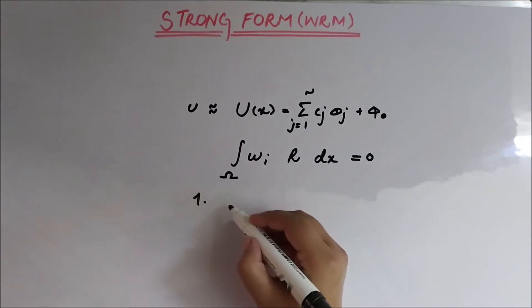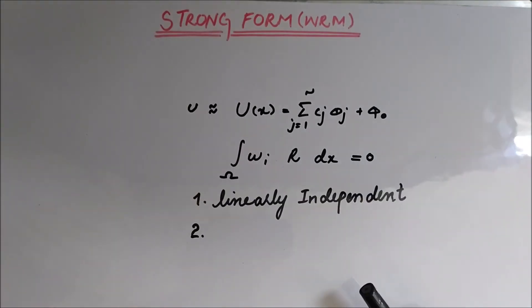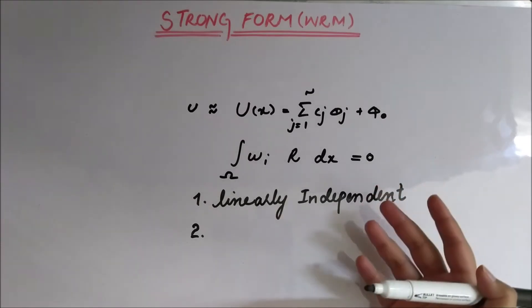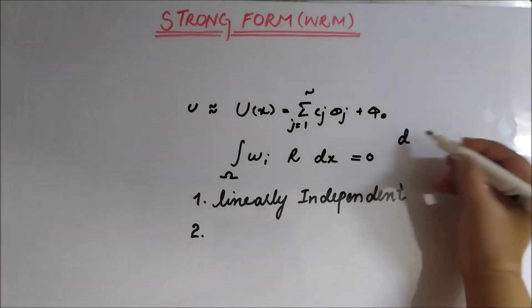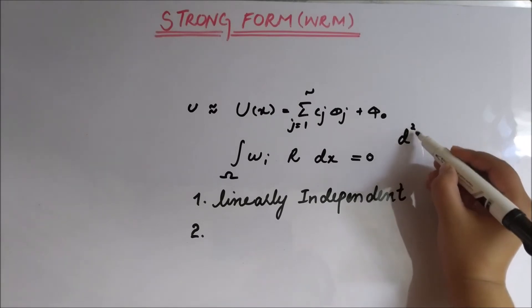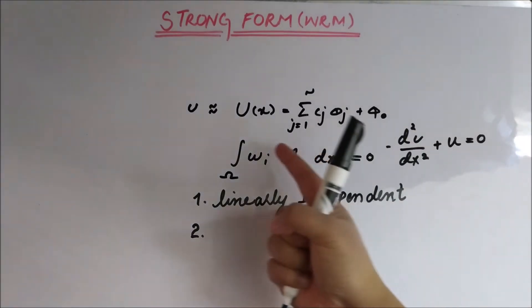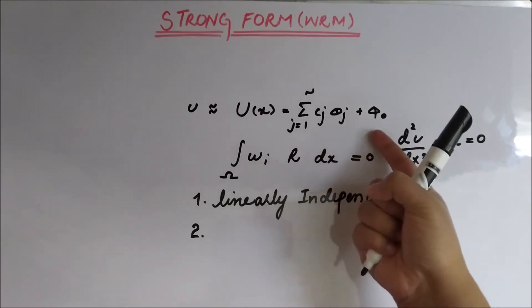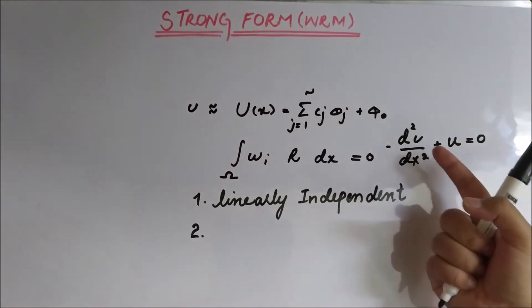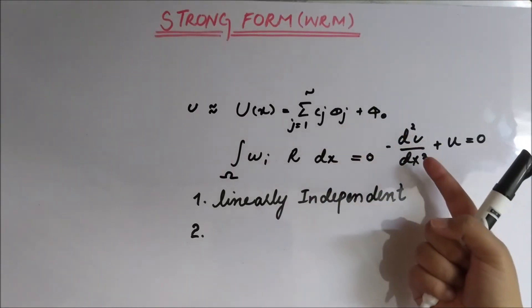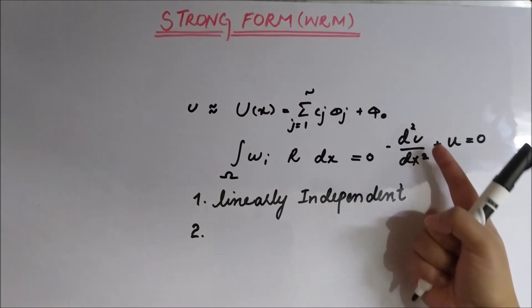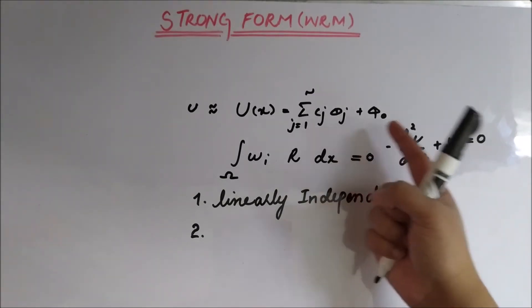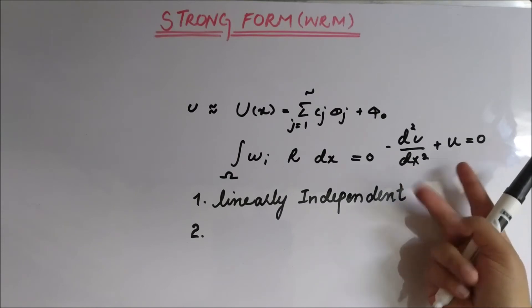The second condition is about the differentiability of the shape functions, because whenever we have a differential equation — for example, a differential equation of a certain type — the differentiability of the functions matters a lot because of the structure of u. In the strong form, the shape function needs to be sufficiently differentiable, that is, of the same order as the differential equation. This is because in the weak form, to solve such a differential equation, the sufficient differentiability order would be one, or C1.